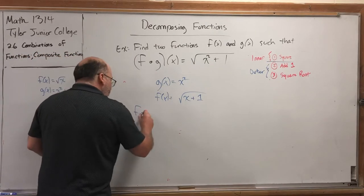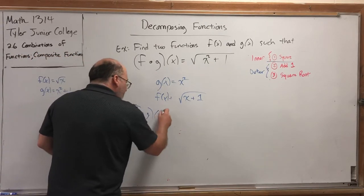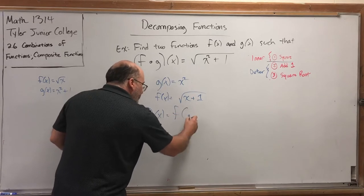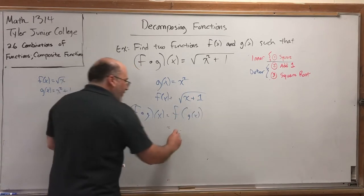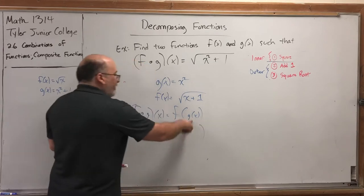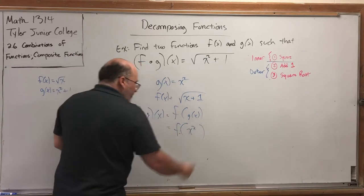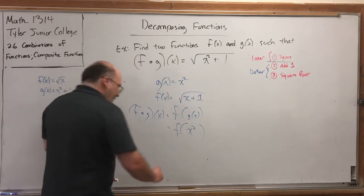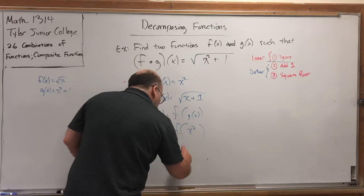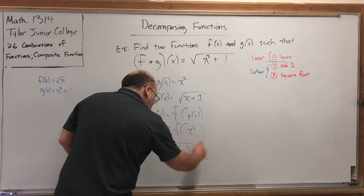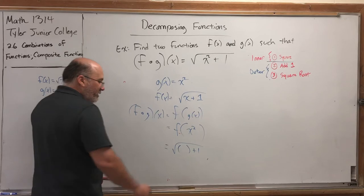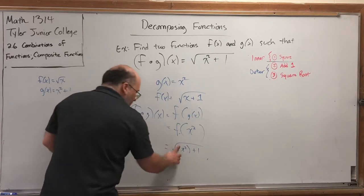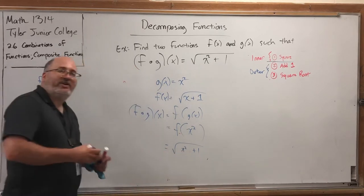Well, f of g of x is f of g of x. Starting on the inside, g of x is replaced with x squared. Now we have to do what f does to that. f says, give me something, I will add 1 to it, and then square root. That's what f does. It's doing it to x squared. Parentheses aren't necessary. And there's a second answer.